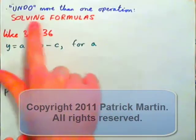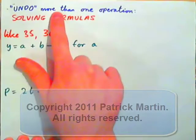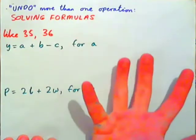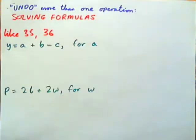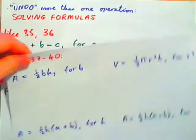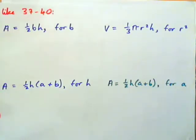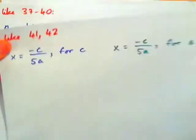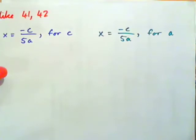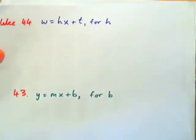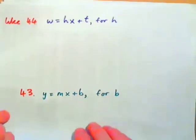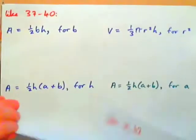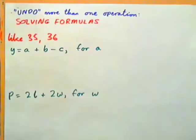Okay, more solving formulas. This time we're going to undo more than one operation — there may be two operations applied. We're going to have examples like 35 and 36 in the text, examples just like 37 through 40, examples just like 41 and 42, and examples just like 44 and 43. Hopefully I'll be able to show you how to do your homework.